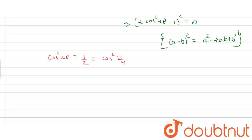Now we can write 2 theta equals n pi plus minus pi by 4, where n belongs to integers. By shifting 2 from left hand side to right hand side, we get theta equals n pi by 2 plus minus pi by 8.